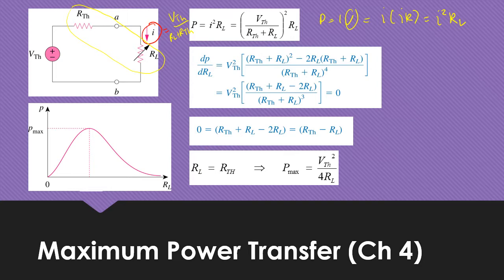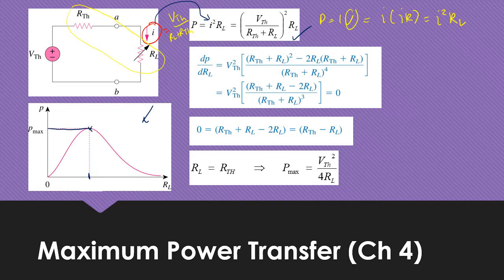Since we know that current is equal to VTH divided by RL plus RTH, we can substitute the current into this equation. If you look at the graph here, this is power versus RL, and at this maximum peak, what is RL equal to?